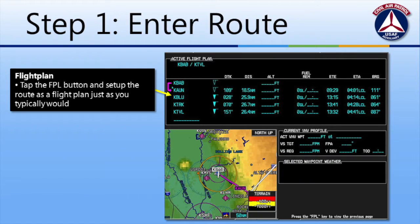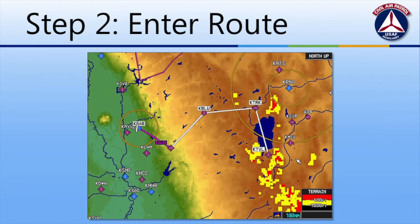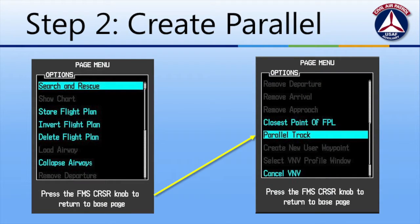We begin by entering a flight plan into the G1000 that reflects the missing aircraft's actual route of flight. Here we can see that route depicted on the G1000 map. With the flight plan window still open, hit the menu button to bring up the page menu, and then scroll down until the parallel track feature is highlighted.